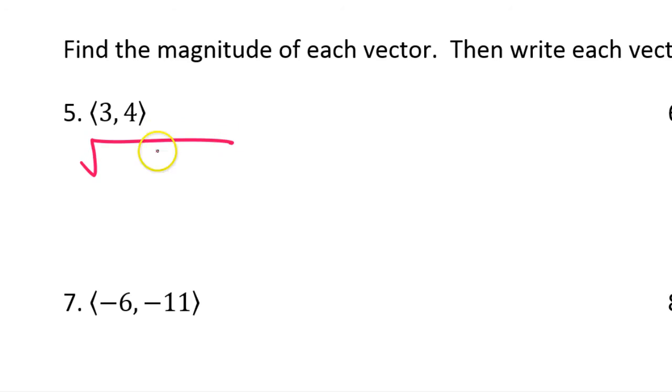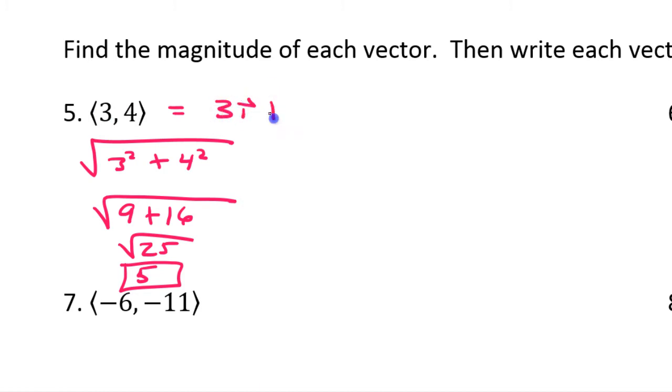Which is just going to be the square root of 3 squared plus 4 squared. Square root of 9 plus 16. Square root of 25. So, that's just going to be 5. So, there's my magnitude, it's 5. In unit vector form, this will be 3i plus 4j.